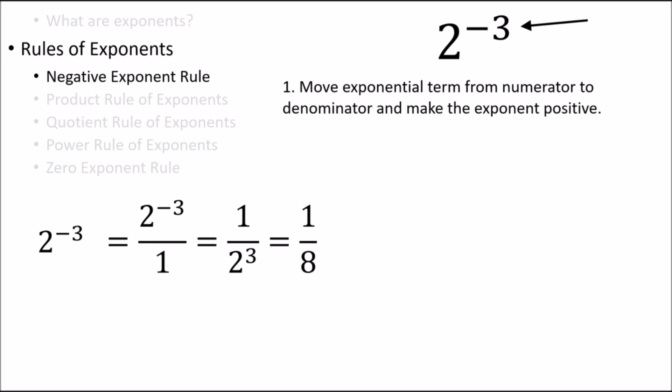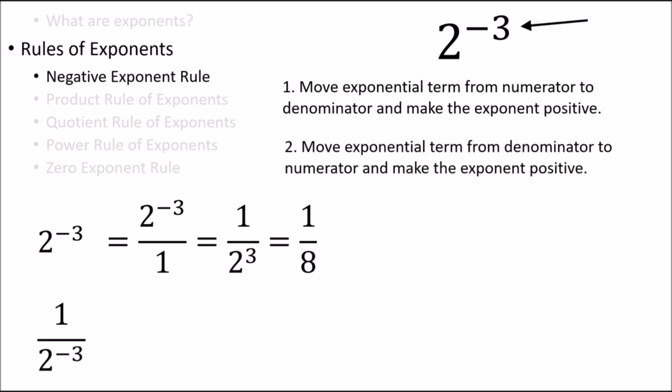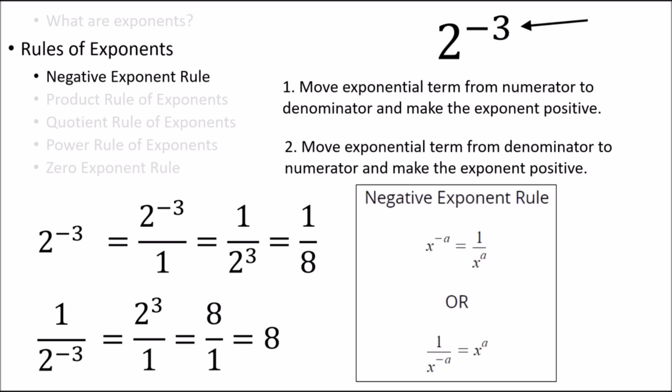We can also do the reverse — using the negative exponent rule to move exponents from the denominator to the numerator. For example, let's simplify 1 divided by 2 to the power of negative 3. Applying the negative exponent rule, we can move the exponential term from the denominator to the numerator and change the exponent to positive. So here we can see that 1 divided by 2 to the negative 3 has the same value as 8. This is a shorthand way to express the negative exponent rule in math terms: switch the exponential term from the numerator to the denominator, or vice versa, and we can make the exponent positive.